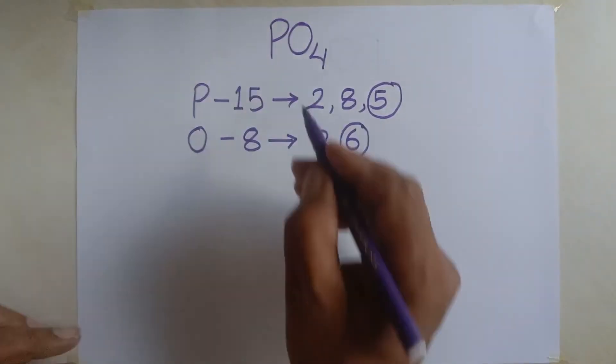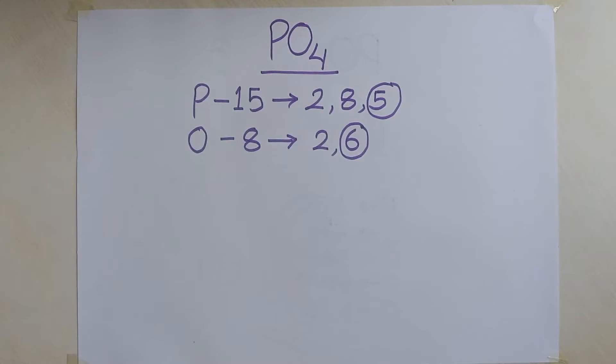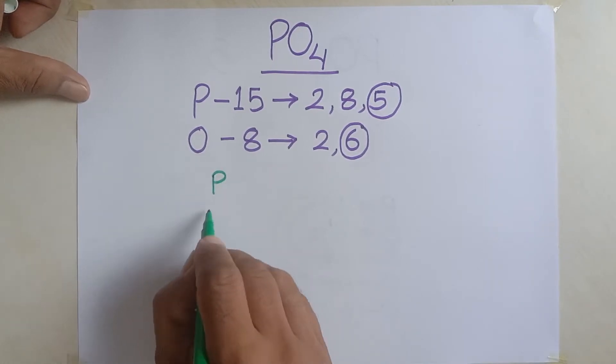Now, how they are combined with each other in phosphate? I want to tell you about their combination in phosphate. One atom of phosphorus and four atoms of oxygen.